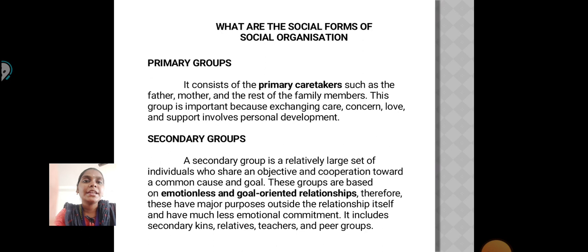Secondary Group: A secondary group is a relatively large set of individuals who share an objective and cooperation towards a common cause and goal. These groups are based on emotional and goal-oriented relationships. Therefore, these have a major purpose outside the relationship itself and have much less emotional commitment. It includes secondary kinds, relatives, teachers and peer groups.